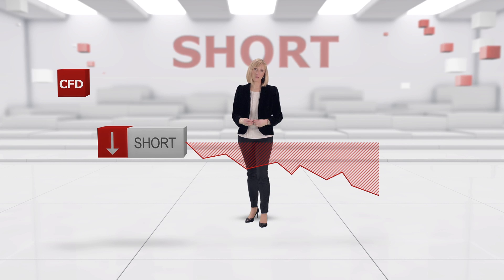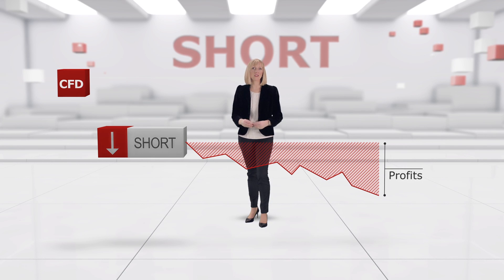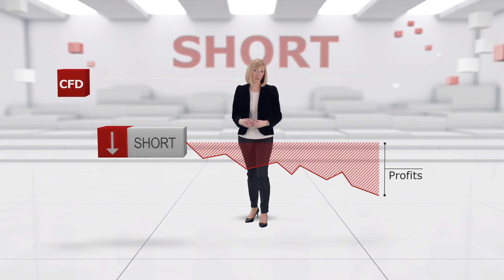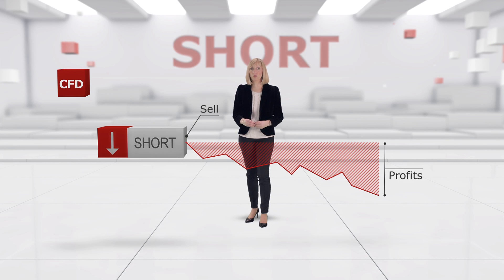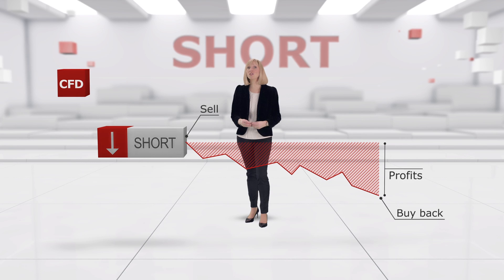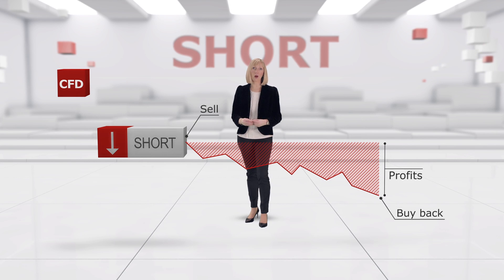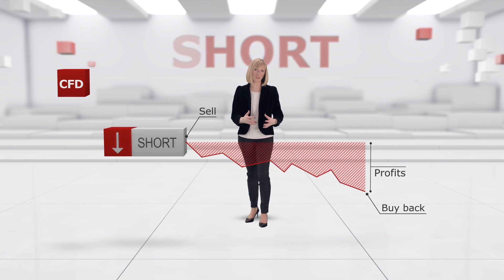The reverse of going long is going short. Most CFDs can be sold short, meaning you profit if the market falls. On a practical level, you'd initiate your trade by selling a CFD on a market you think is going to fall in price, aiming to buy it back at a lower price. Your profit would then come between the sell and buy prices.